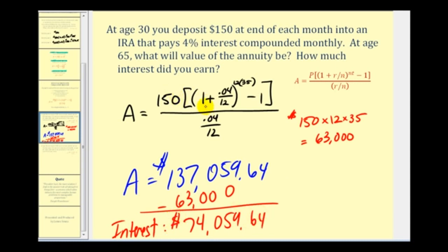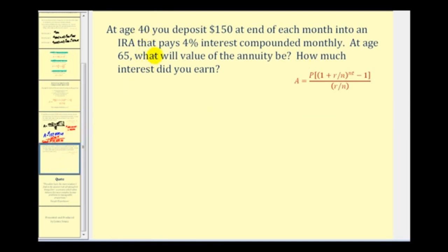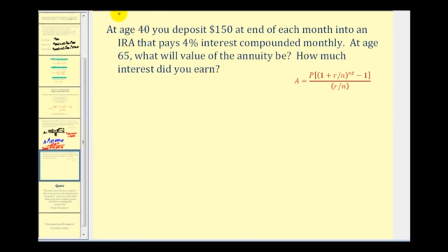Now for the second example, we're going to look at the same situation, except instead of starting at age thirty, what happens if you start at age forty? How will that change the balance, as well as the amount of interest earned? So the formula will look almost exactly the same, except now t is going to be twenty-five, instead of thirty-five, because we're trying to save ten years later. So our exponent here is going to be twelve times twenty-five, instead of twelve times thirty-five.